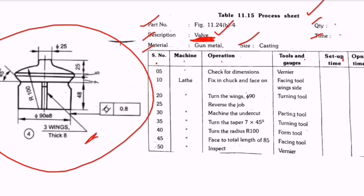The first important operation in the process sheet is checking the dimensions. When preparing any product, we check dimensions using measuring devices — here we use a vernier scale. The last operation is inspection of the final object. In between, according to the shape of the part, we perform operations on different machines. The first operation is: fix the job in the chuck and do the facing operation with a facing tool — fixing the job in the chuck means in the lathe machine.